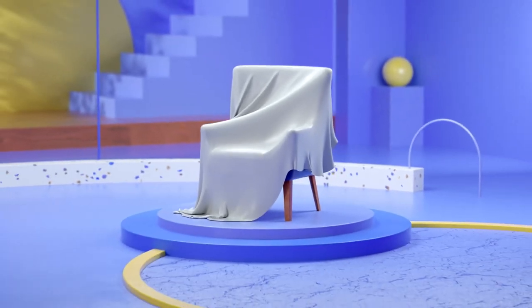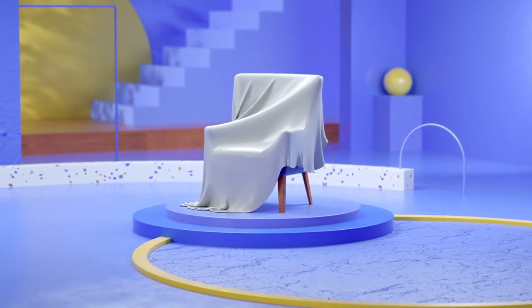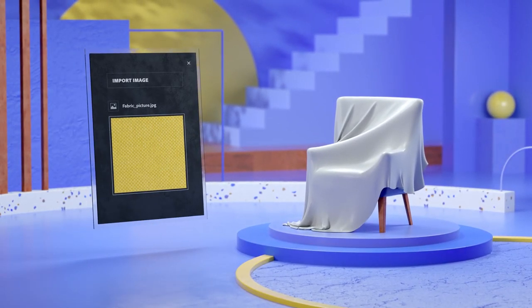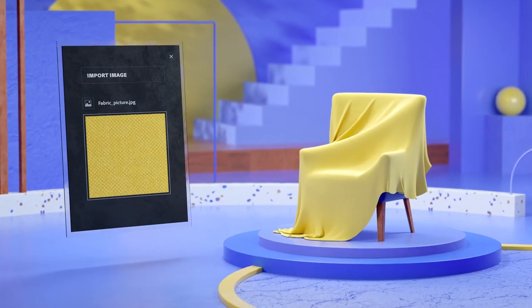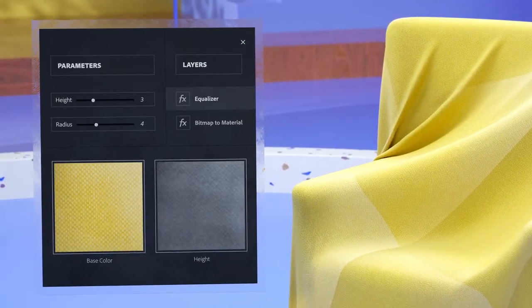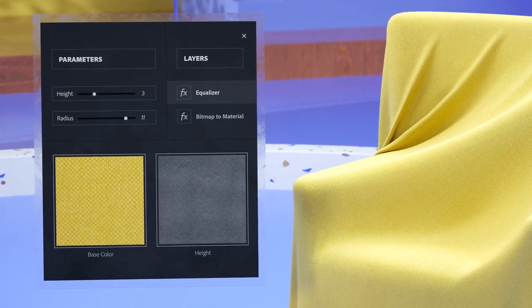The main strength of Sampler is how it converts images into a material. No matter if it's an advanced scan or just an image you found, Sampler turns it into a realistic PBR material. It corrects any unwanted lighting and reconstructs detailed height maps with artificial intelligence algorithms.